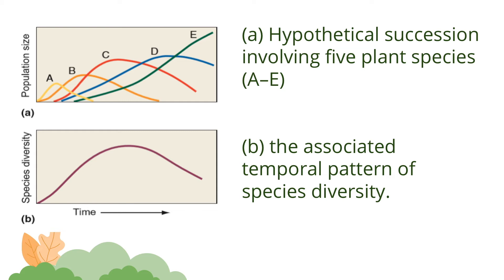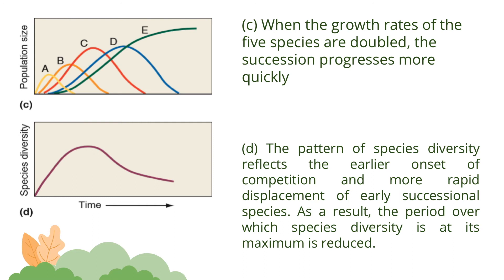Graph A shows a hypothetical succession involving five plant species, and Graph B shows a shaded temporal pattern of species diversity. Species diversity increases initially as new species colonize the site. However, diversity declines as changing environmental conditions and competition result in the displacement of early successional species. Graph C shows that when the growth rates of the five species are doubled, succession progresses more quickly. Graph D shows the pattern of species diversity reflects the earlier onset of competition and more rapid displacement of early successional species.